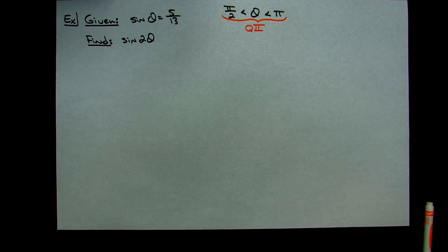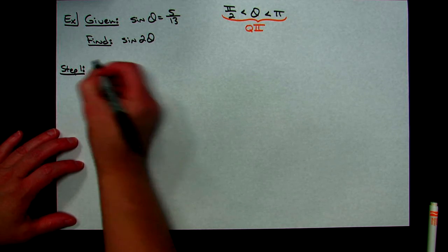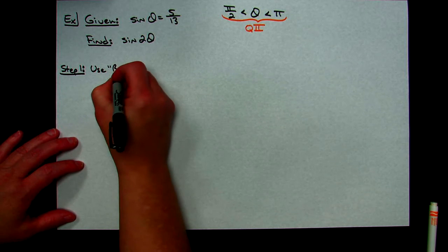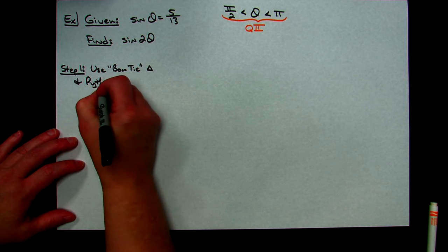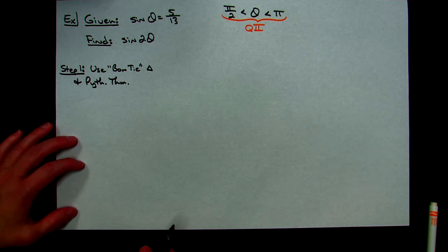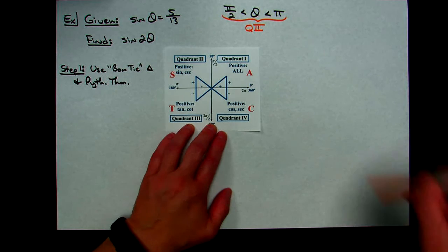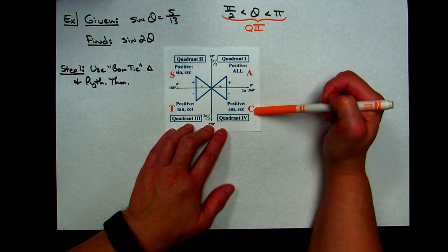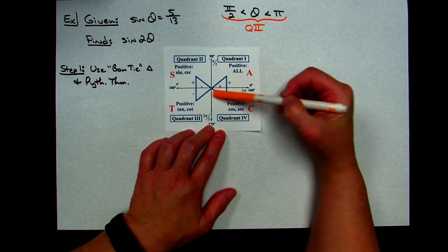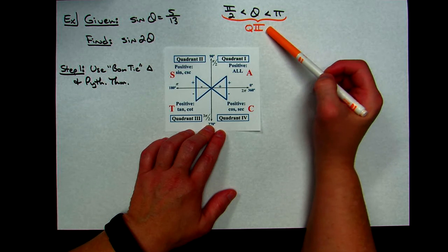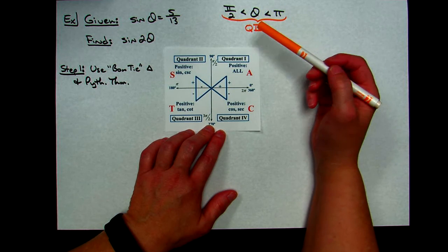Let's break this down into three steps. Step one is to find cosine θ using our bow tie triangle and Pythagorean theorem. The bow tie triangle is drawn in the coordinate plane — the red letters show 'all students take calculus,' helping you know which trig functions are positive in which quadrant. The bow tie in the center reminds you how to draw the reference triangle in each of the four quadrants.